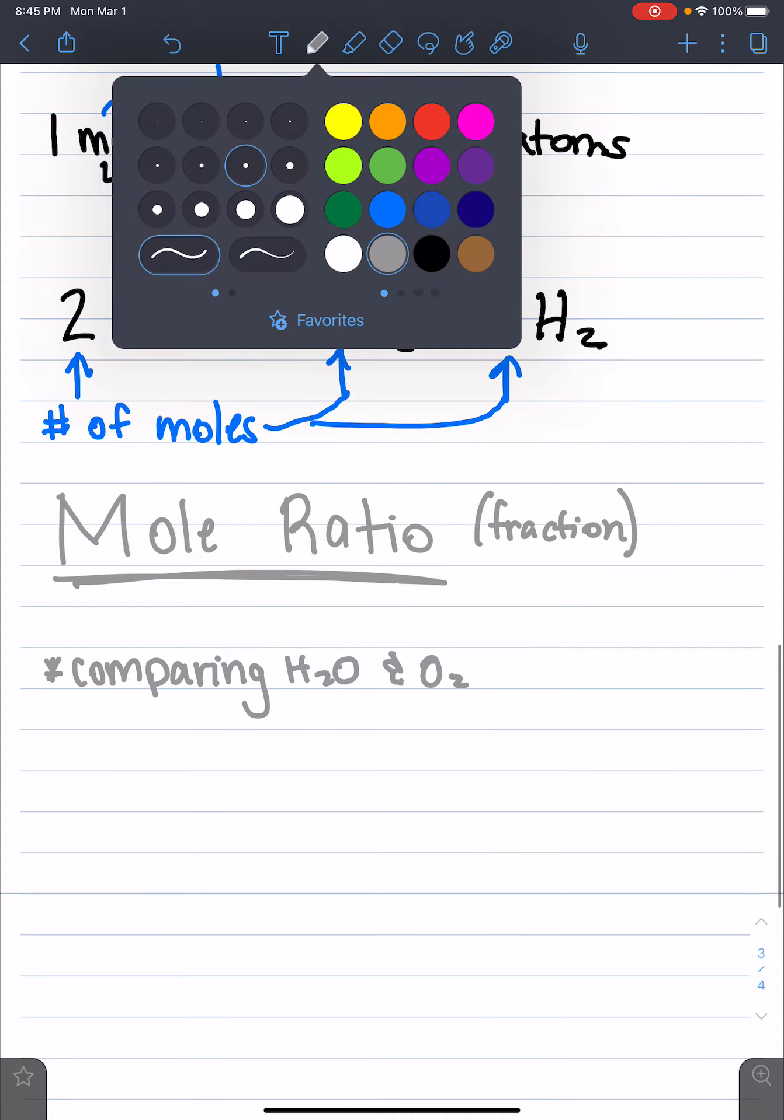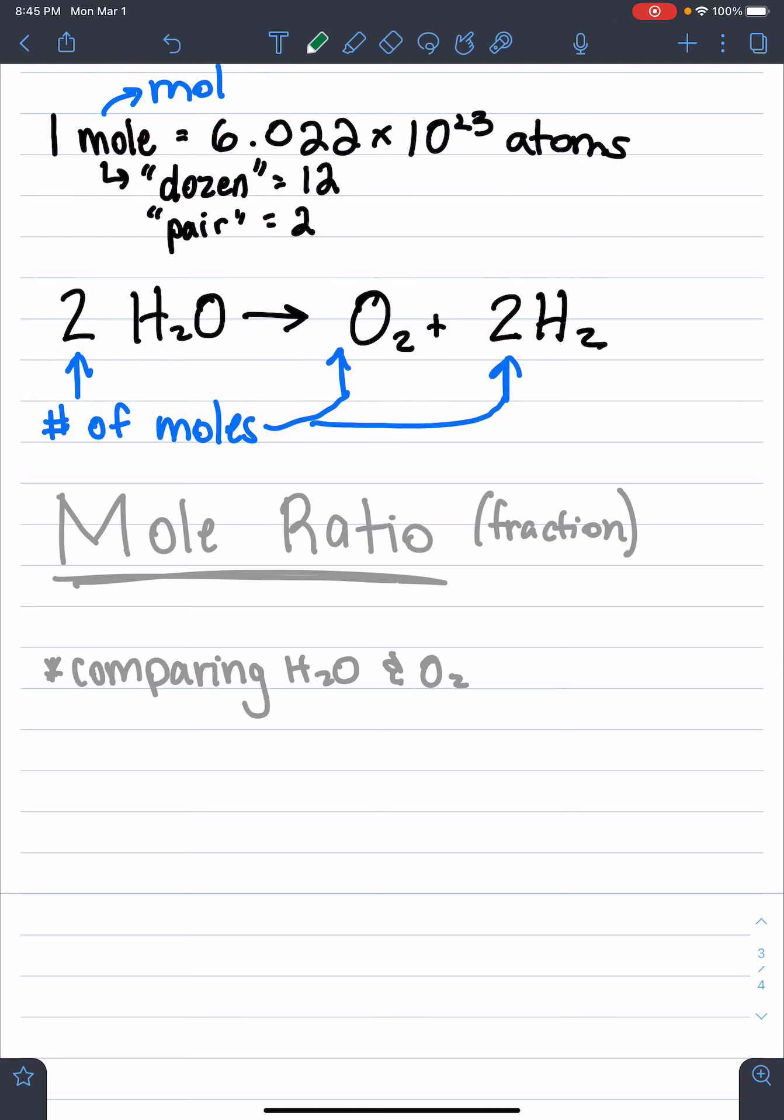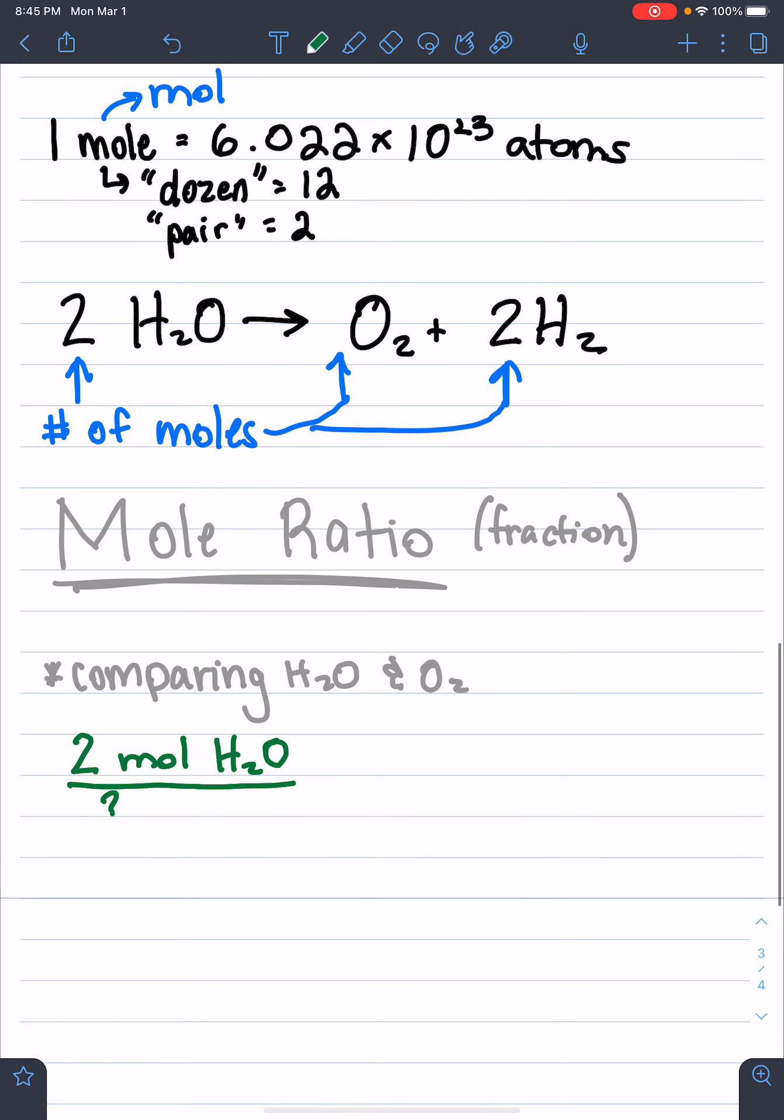So how I would do that is you could write it either way. We're going to write it both ways on your homework. So the first fraction that we could make to compare H2O and O2 is we could say, when we have two moles of H2O - remember I can always shorten the word moles to MOL - when you have two moles of H2O, we're going to have how many moles of O2?